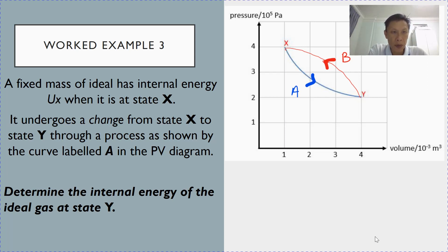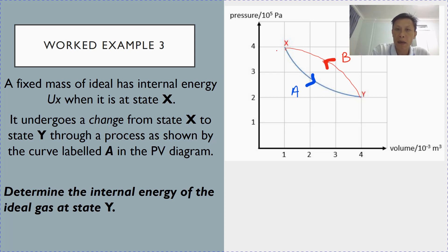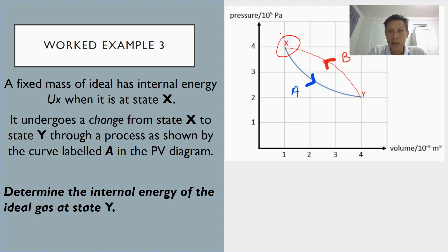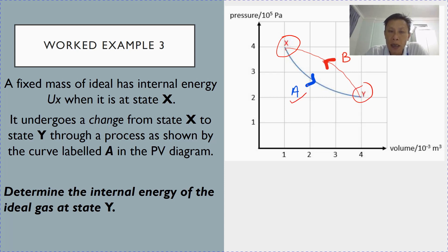In work example 3, we are given that the internal energy at state x, represented by ux. This gas undergoes a change from state x to state y through process A, represented by a curve in this PV diagram. You are asked to determine the internal energy of the ideal gas at state y.